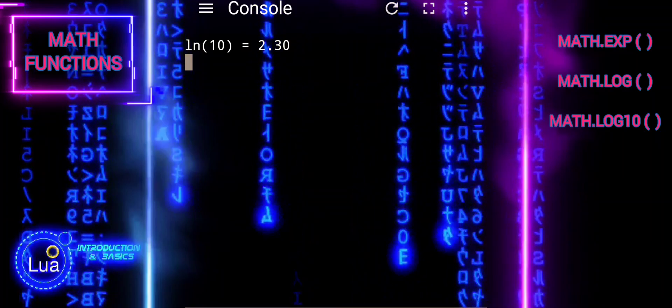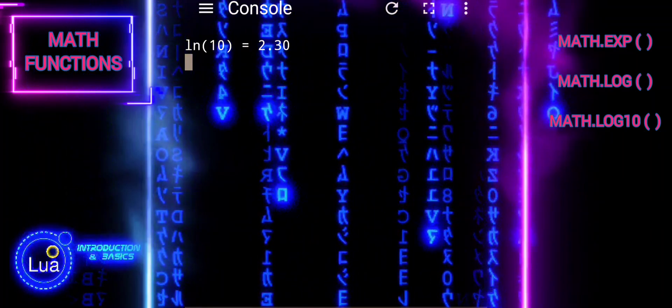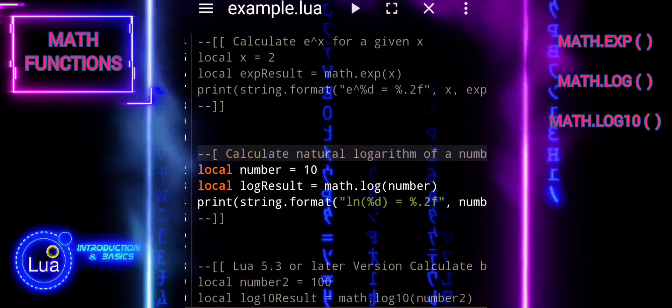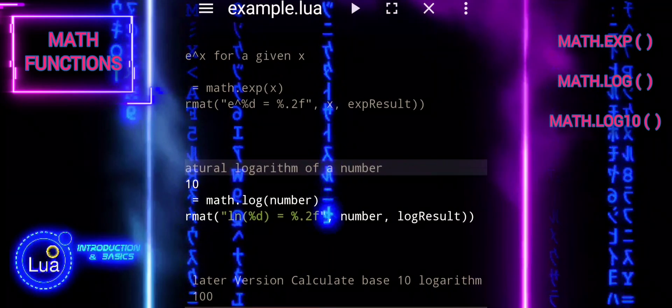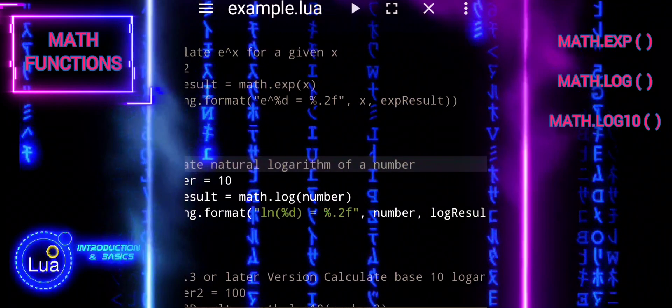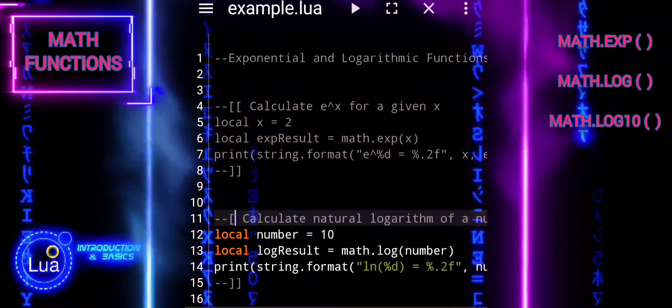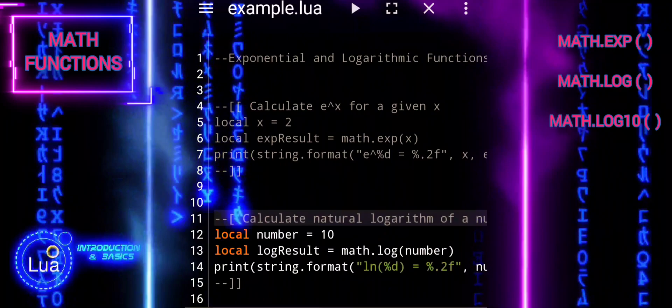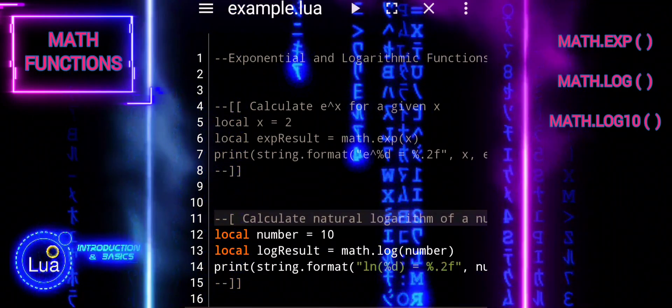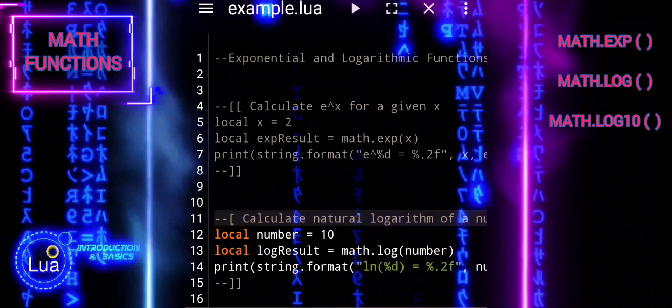The last line prints the result using string.format to format the output. Percent d is a placeholder for the number, and percent f is a placeholder for the natural logarithm result. .2f specifies that the floating point number should be formatted to display two decimal places. The value of number and log_result are passed to string.format as additional arguments.